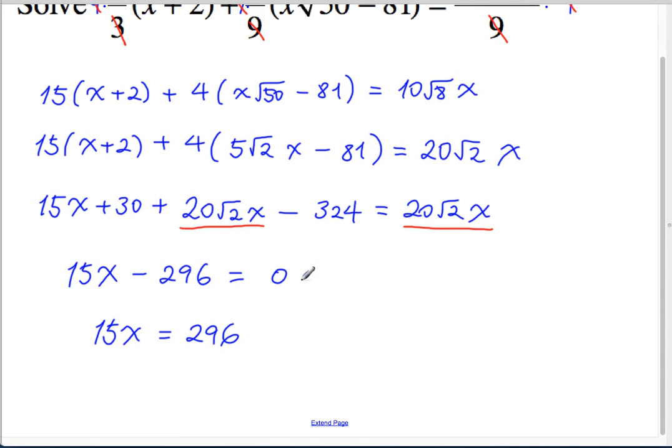So I added both sides by 296, and now I'm going to divide both sides by 15. Oh, we're wrong, aren't we? What? 324? Minus 324, 296. Oh, no, we're right. Oh, it's got to be a 4. 294. Because of the 0, yeah. 294, not 296. Whoops.